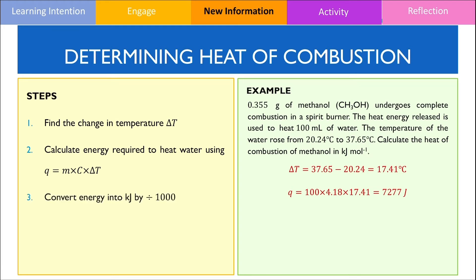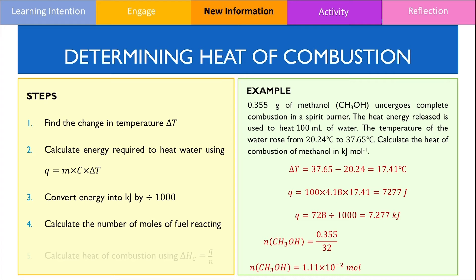Because we generally work with kJ, we need to convert this value by dividing it by 1000. From here, we need to calculate the number of moles of fuel, so we're going to divide 0.355g of methanol by its molar mass, which will give us this as an answer. By dividing the energy absorbed by the number of moles, this will give us the heat of combustion for methanol, which is going to give us an answer equal to 656 kJ per mole.